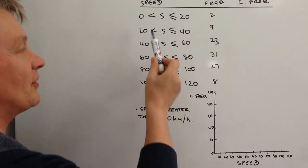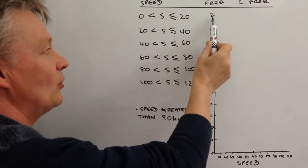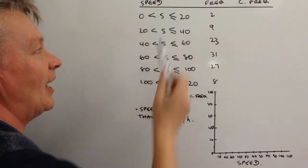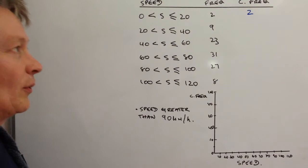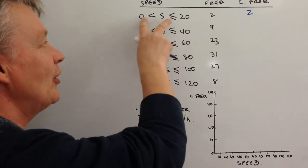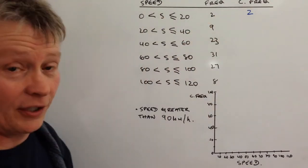So what we're saying is that the speed of two lorries between zero and 20 kilometers per hour is that one there. So the cumulative frequency of the first group is just two.